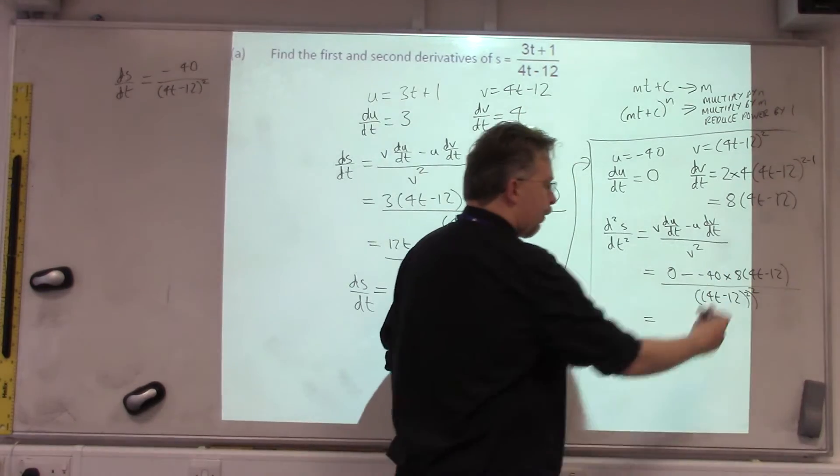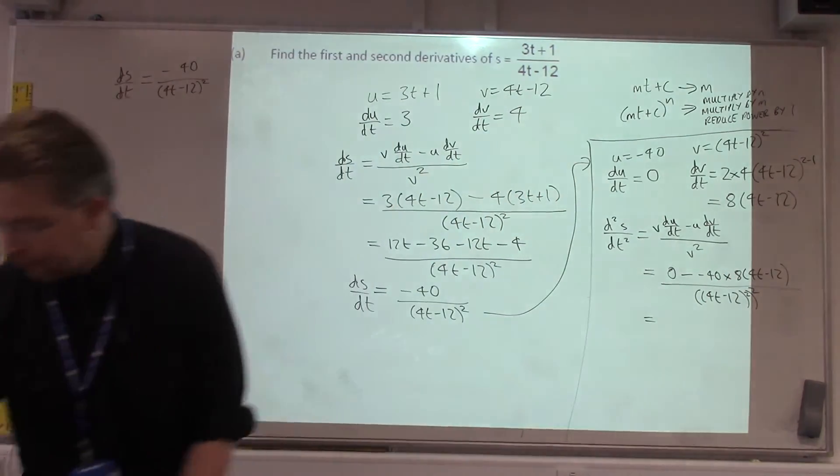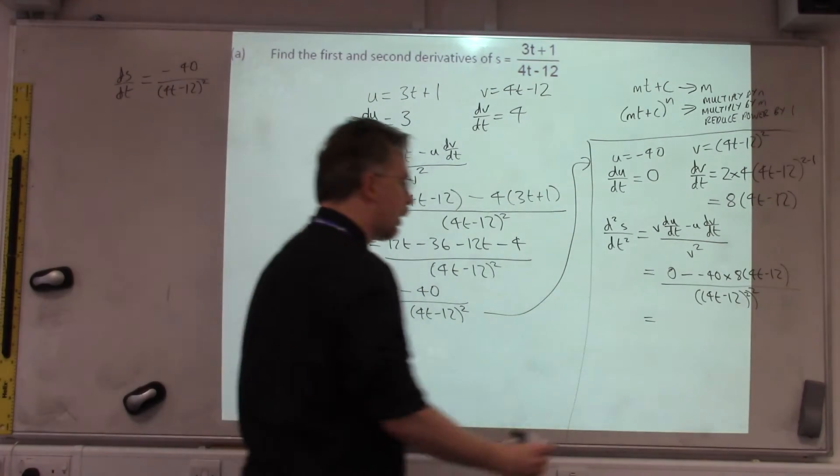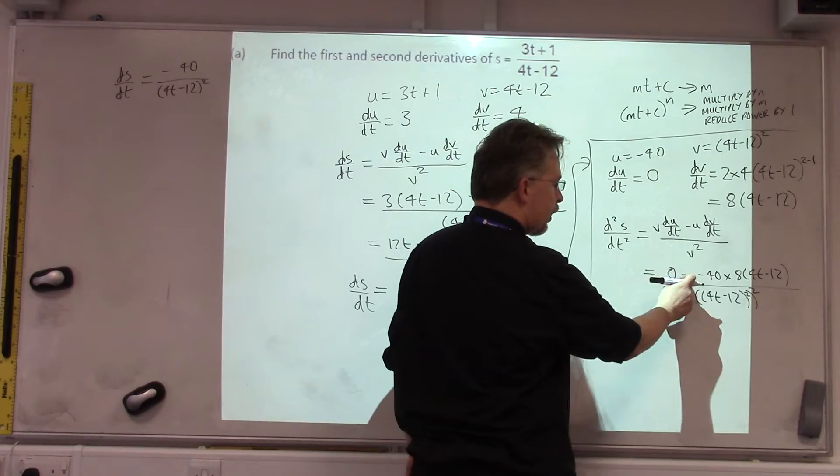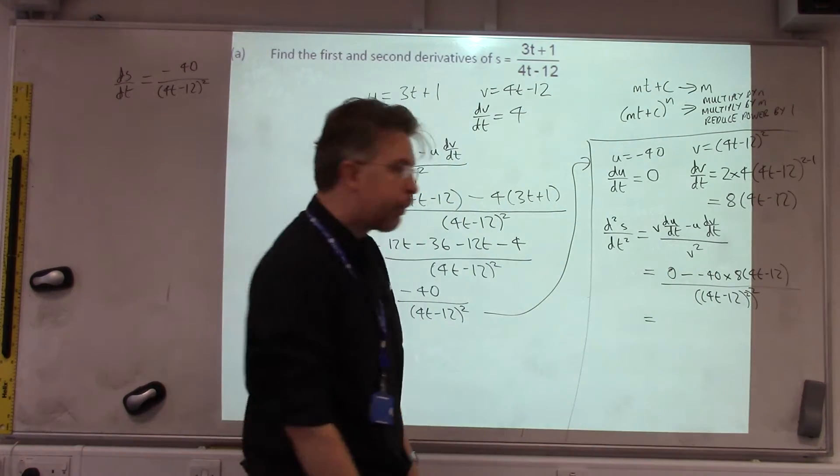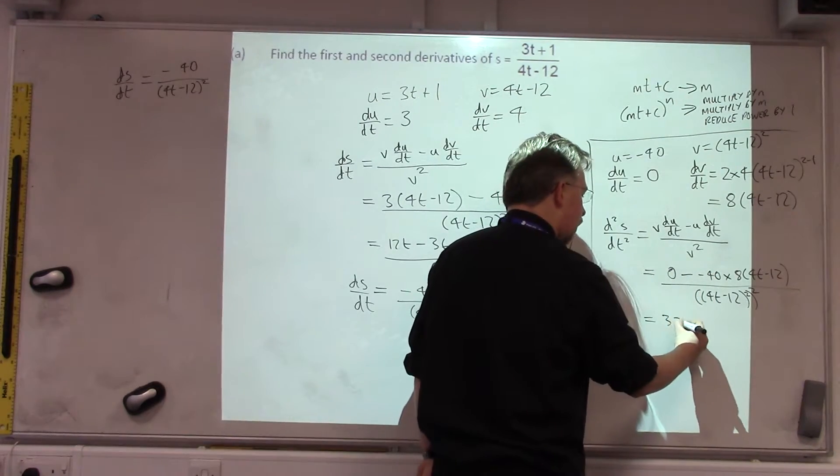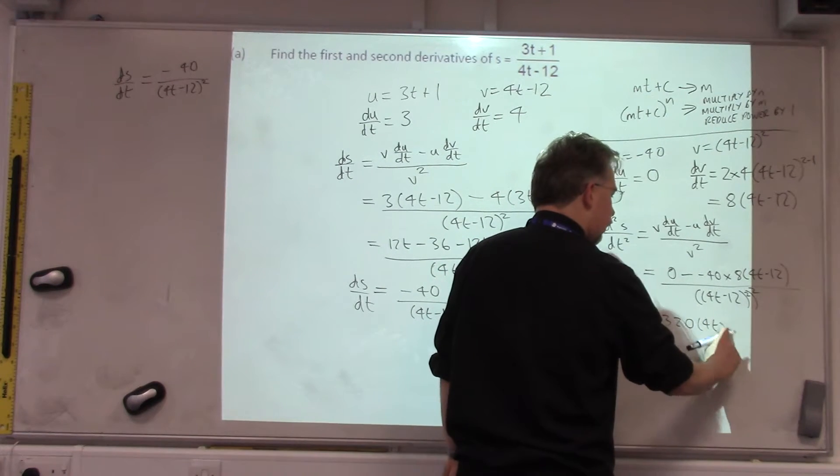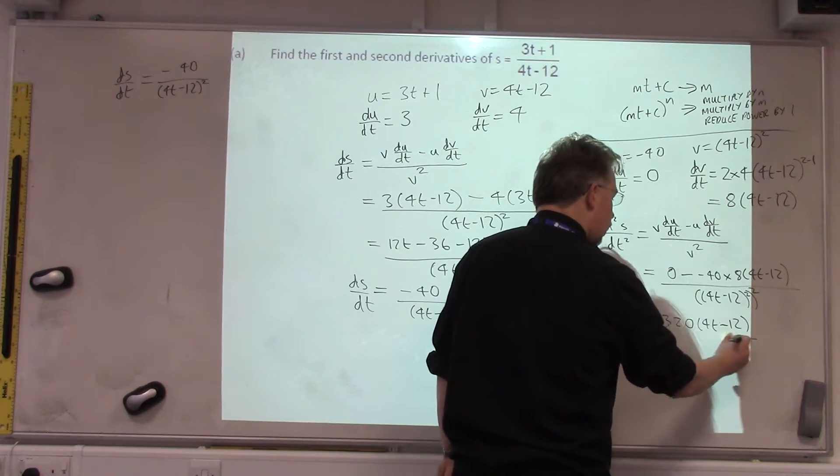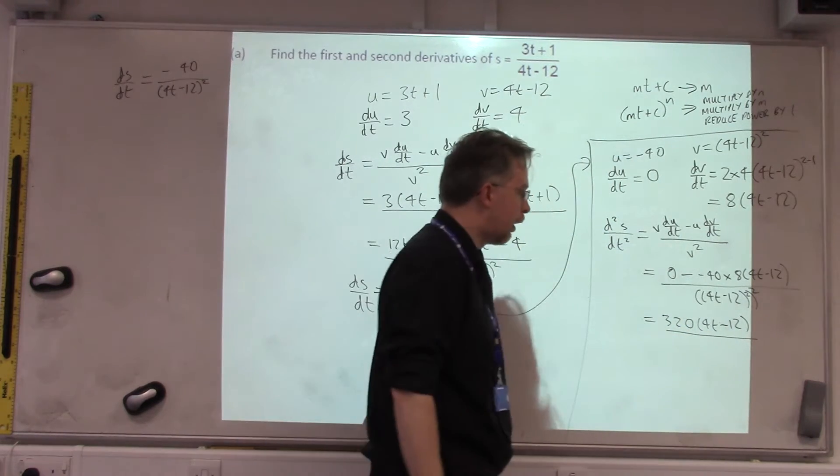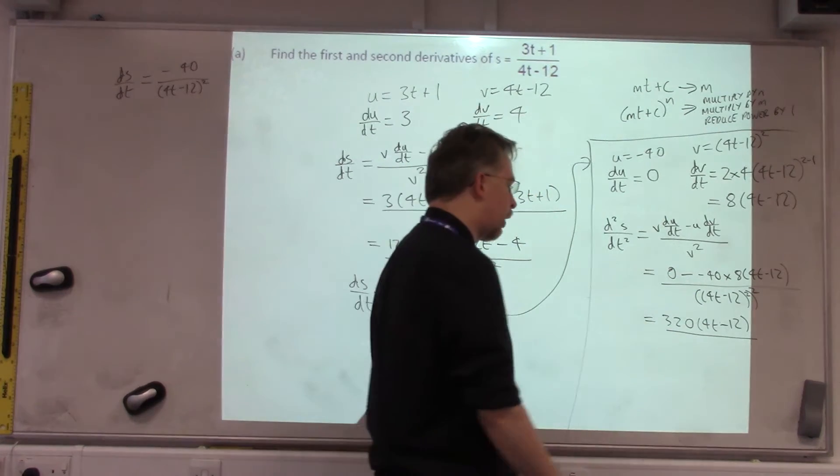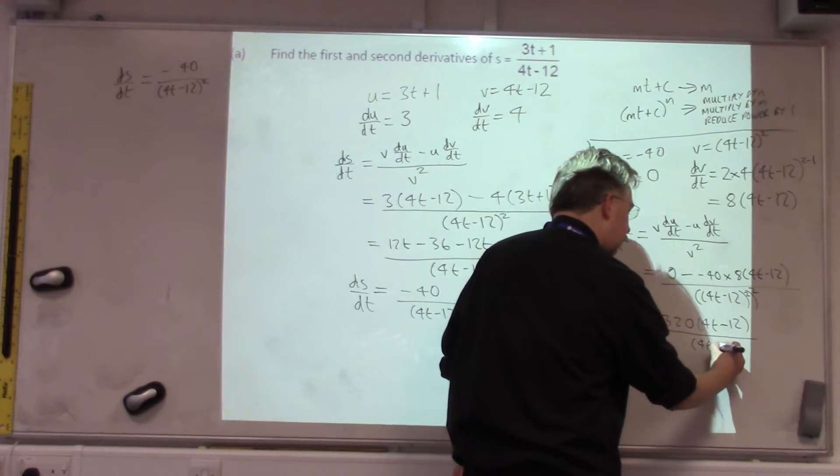So, minus 40 times 8 is minus 320, but we times by minus at the front, so that becomes plus 320, times 4T minus 12. All over, squared, to the power of square, you times them, so you get 4T minus 12 to the power of 4.